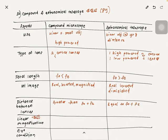For linear magnification — this is very important — for a compound microscope you take mo times me, where mo is the magnification produced by the objective lens and me is the magnification produced by the eyepiece. For the astronomical telescope, linear magnification is fo divided by fe. A way to remember this: you use a telescope to look at your enemy, and another word for enemy is 'fo', so that's how to remember the formula fo over fe.